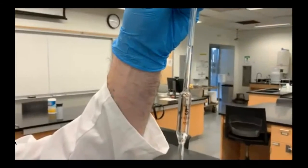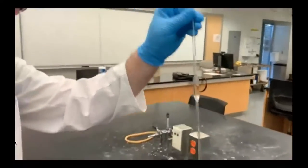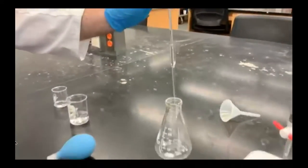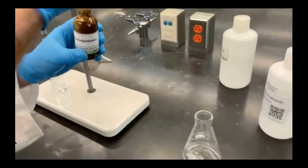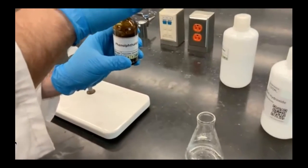We're going to draw up exactly five milliliters of vinegar and transfer it into our Erlenmeyer flask. We'll also add a little bit of water to that flask and five drops of phenolphthalein.